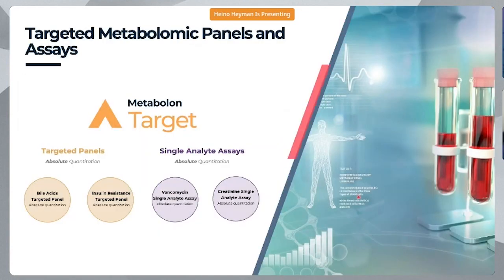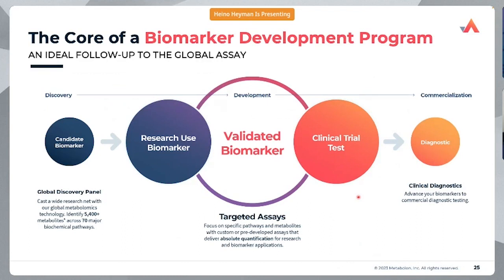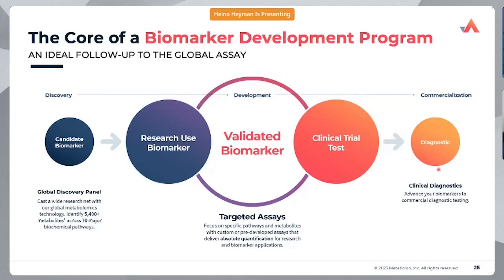Our other targeted panels are more focused and smaller in number, and usually fall within our core biomarker development program. We typically start with a global discovery panel, identify a subset of biomarkers or molecules of interest — as seen in the first case study — and then validate those analytically and biologically on a targeted panel. We can take that all the way to validating in a clinical trial setting, moving toward developing diagnostics.